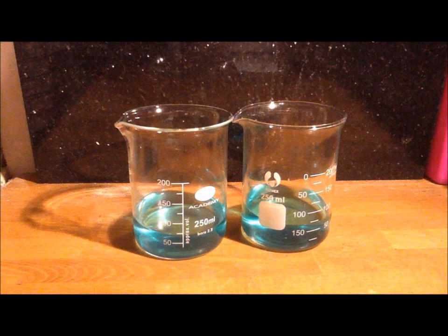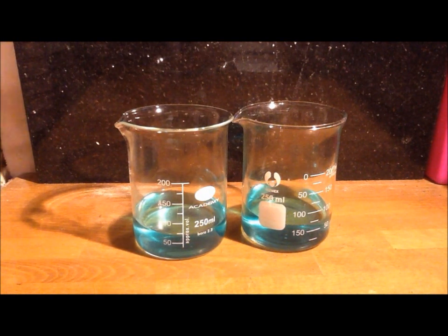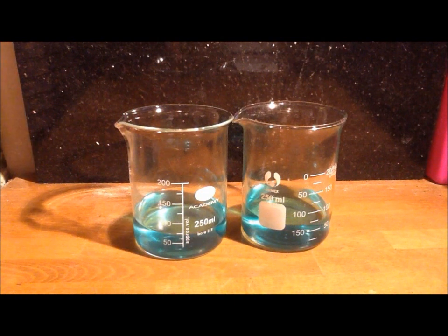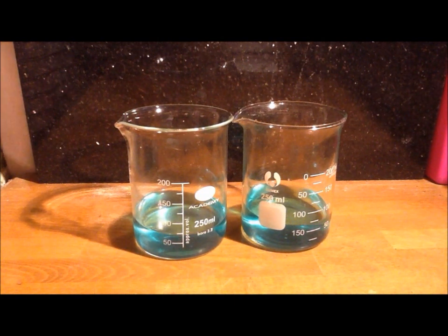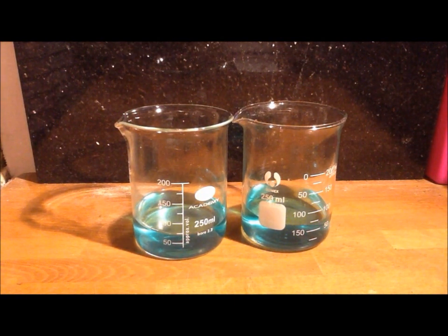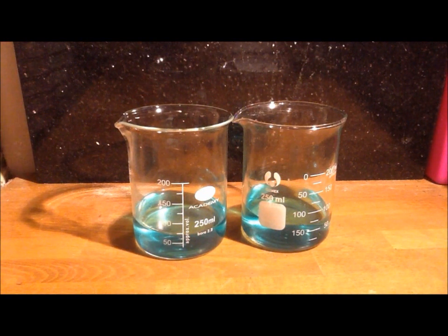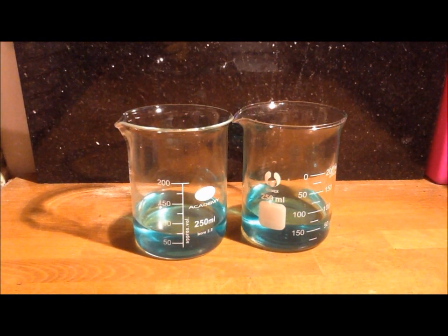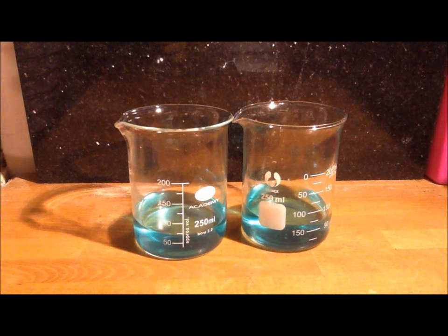Okay, so here we have two beakers full of 75 milliliters of the bleach. And the most common type of bleach is chlorine based, so we'll test for that first by adding hydrochloric acid.